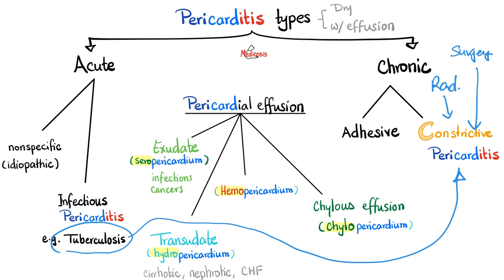Pericardial effusion could be exudate, transudate, blood, or lymph — i.e., chyle. If it's exudative, it's called seropericardium. Serosanguinous means sero (pus) plus sanguinous (bloody). Infections can lead to exudative pericardial effusion, and don't forget cancers — especially cancer metastasis. A very common exam question involves a patient with breast cancer metastasized to the heart, leading to exudative malignant pericardial effusion.